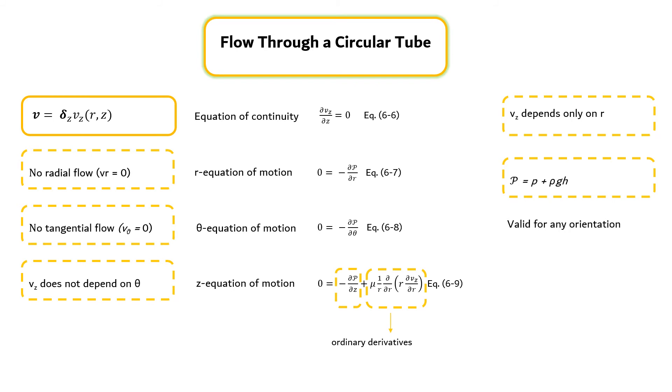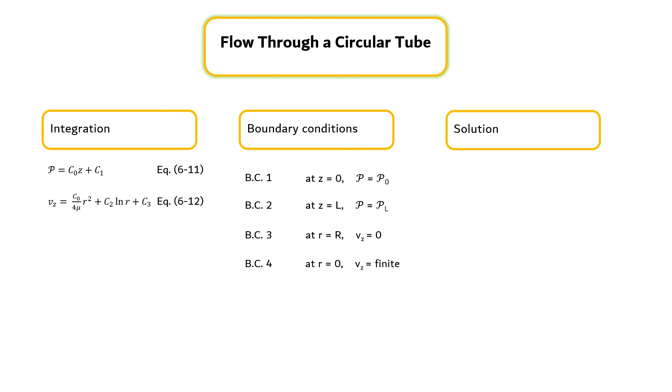The only way that we can have a function of r plus a function of z equal to zero is for each term individually to be constant. So equation 6-9 reduces to equation 6-10. The P and vz equations can be integrated, and the results are shown in equations 6-11 and 6-12. The four constants of integration can be found from the boundary conditions, and the final solutions can be expressed by equations 6-13 and 6-14.